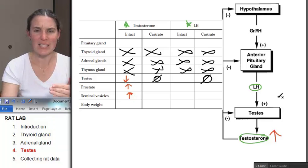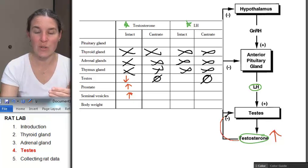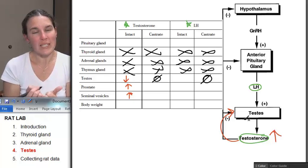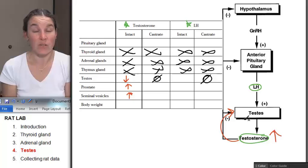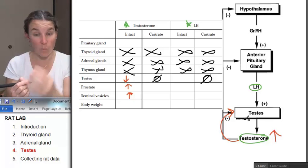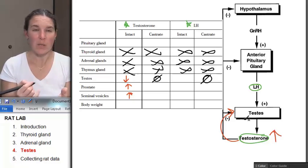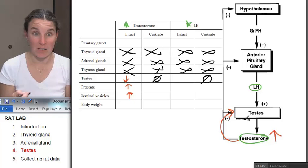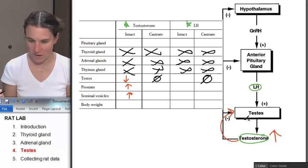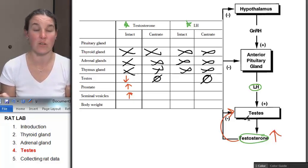Because the testes are directly, testosterone comes back and says to the testes, we don't need any more, please get smaller. And the testes say, I do anything that testosterone tells me to do. And so they will get smaller, but the prostate is affected by testosterone and it will get bigger. And the seminal vesicles are affected by testosterone and so they will get bigger too.